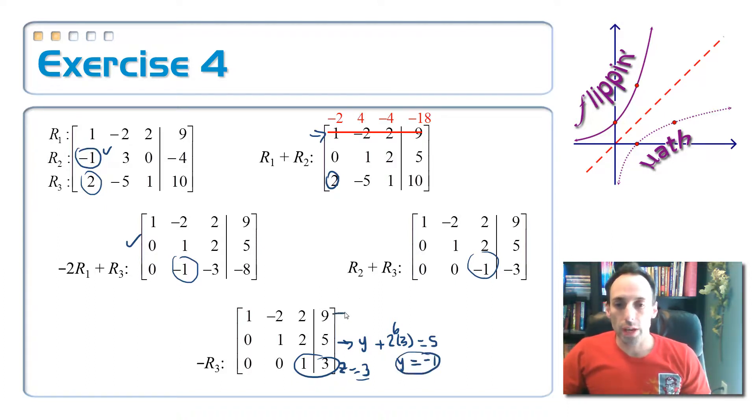And then finally, the top row is saying, 1x, so I just write in x, minus 2 times my negative 1, plus 2 times my 3, which is my z-coordinate. Whoops! That should be a 3, not a z. Is equal to 9.